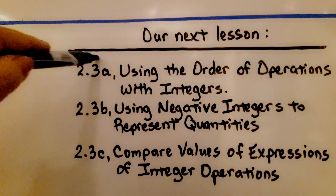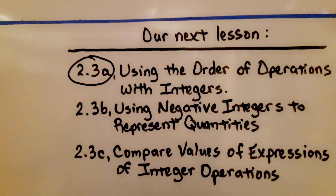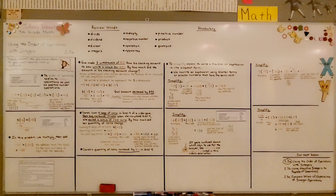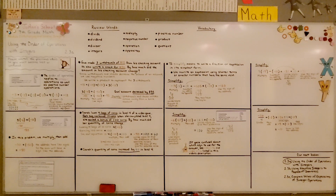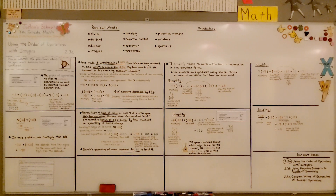We've finished 2.3a and will move on to 2.3b using negative integers to represent quantities. Remember: when you reach the multiplying and dividing part of the order of operations, multiply or divide from left to right, whichever comes first. For addition and subtraction, add or subtract from left to right, whichever comes first. Have a great day, and I'll see you next time!